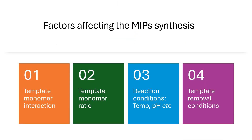Some of the factors that affect the synthesis of molecular imprinted polymers are template-monomer interaction, template-monomer ratio, reaction conditions such as temperature and pH, and the most important is the removal conditions of the template.